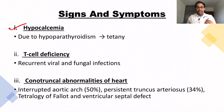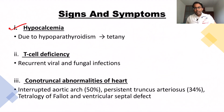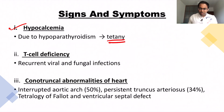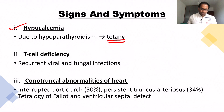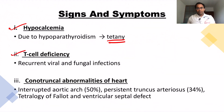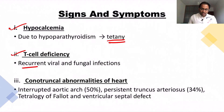The first sign is hypocalcemia, which causes a phenomenon called tetany — a set of involuntary muscle contractions that occur in the body, due to low calcium. The next is T-cell deficiency; when we have fewer T-cells, our adaptive immunity is compromised, leading to recurrent viral and fungal infections.